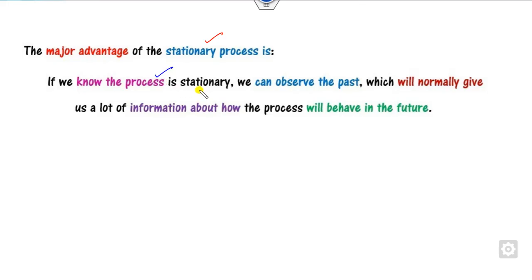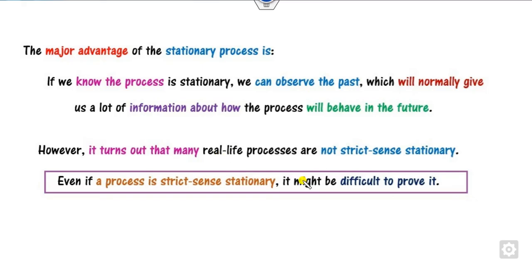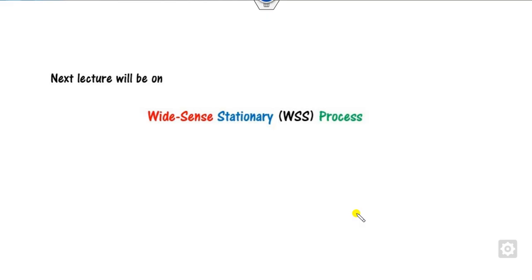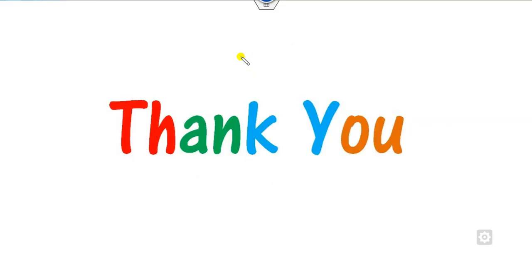The major advantage of a stationary distribution is that if we prove a process is stationary, whatever we have observed in the past will give information about the future, because expected values are constant irrespective of time. However, many real-life problems are not strict sense stationary, and proving strict sense stationarity requires showing infinitely many moments are constant, which is very difficult. To handle this, we will define a weaker form called the wide sense stationary (WSS) or weak sense stationary process, which we will cover in the next class.